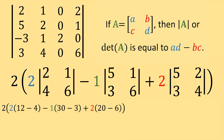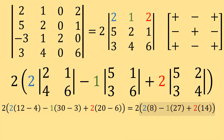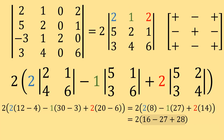All we have left to do is simplify. 12 minus 4 is 8. 30 minus 3 is 27. And 20 minus 6 is 14. Notice I've been carrying the 2 on the outside — it's very important that you bring that along and don't forget it. Finishing the inside of the parentheses: 2 times 8 is 16, negative 1 times 27 is negative 27, and 2 times 14 is positive 28. Adding those together gives 17. And 2 times 17 is 34. So the determinant of our 4x4 matrix is 34.